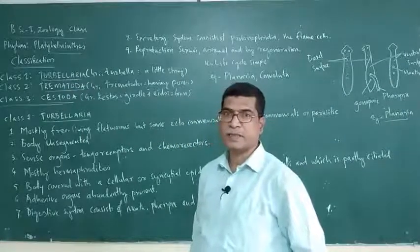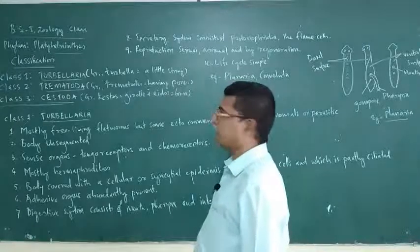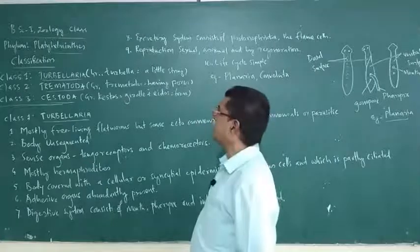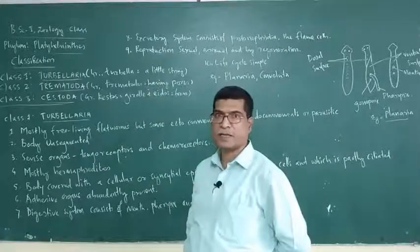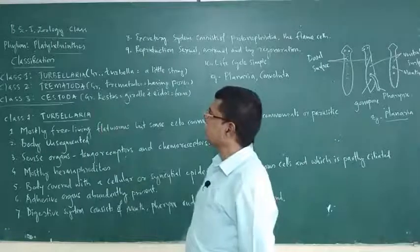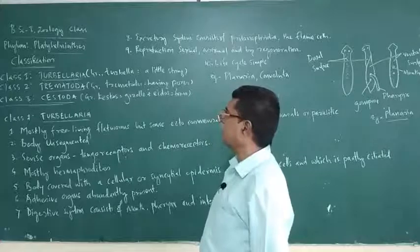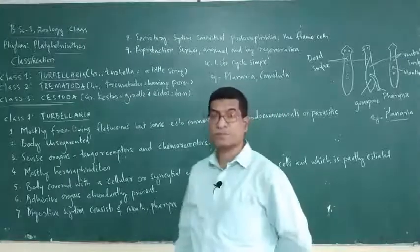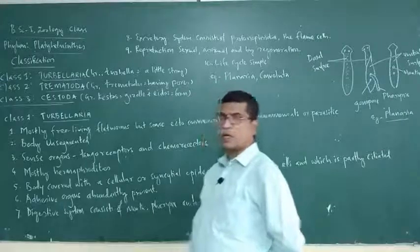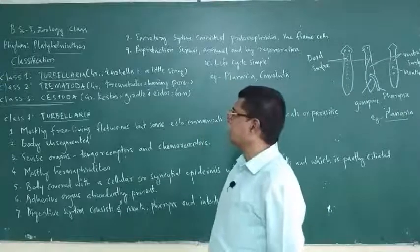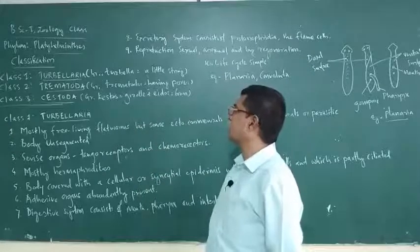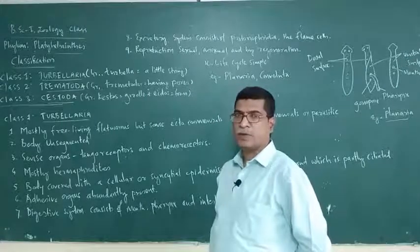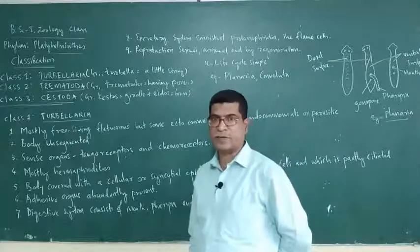The term Turbellaria is derived from Greek language, meaning 'a little strength.' The second class, Trematoda, in Greek language means 'having pores.' In class 3, Cestoda, the Greek word 'kestos' means 'girdle,' and 'inos' means 'form' — girdle-like forms. So depending upon their shape, they have been classified into three classes.